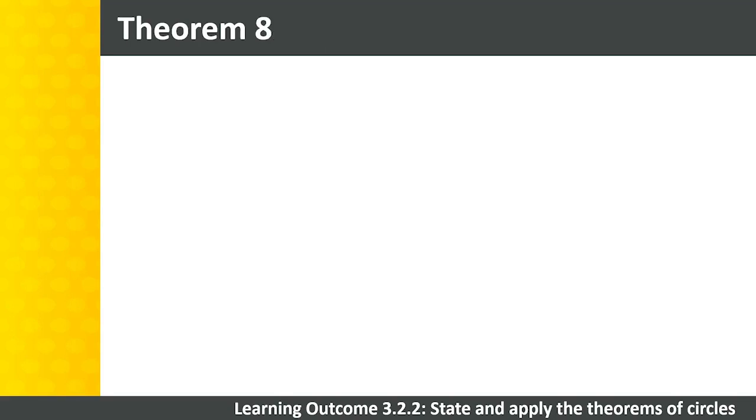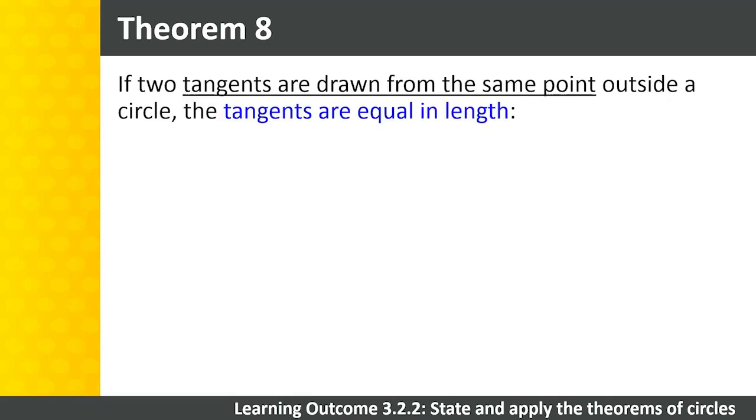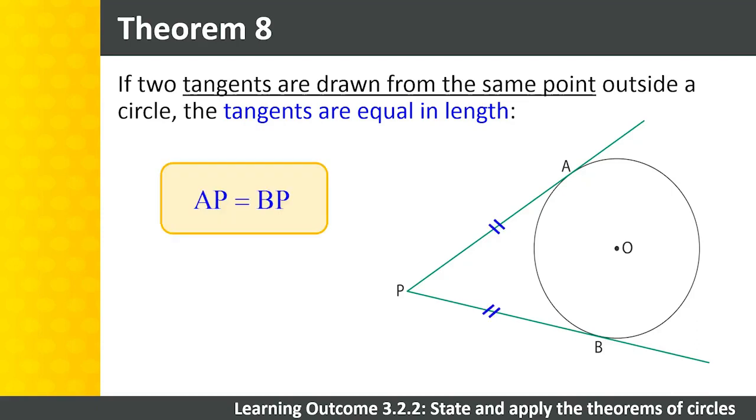Theorem 8 states that if two tangents are drawn from the same point outside a circle, the tangents are equal in length. In this diagram, P is the point outside the circle, and AP is equal to BP. The abbreviation to use for this theorem is tan from a point.